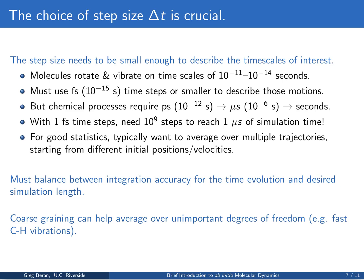So obviously you have to balance the accuracy with which you integrate your equations — in other words, how big a time step you take — against how long a timescale you want to simulate. You can use coarse graining of some form to try to average over less important degrees of freedom. For example, if you don't really care about the CH vibrations, you might freeze them or use some other technique to ignore them so you can do faster timescales. But in general, this is a fundamental limitation on how much we can actually simulate.